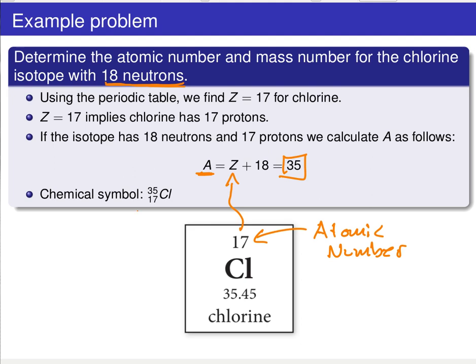Therefore, our chemical symbol is chlorine-35 here, where we have a left superscript of 35 to denote the mass number, total number of neutrons and protons, and a subscript on the left denoting Z, the atomic number, which is 17, because we're dealing with chlorine.